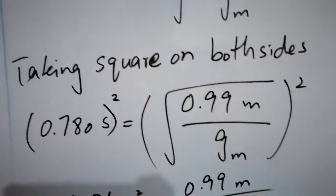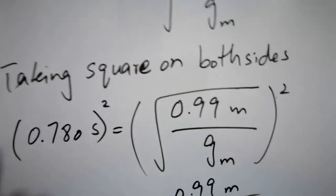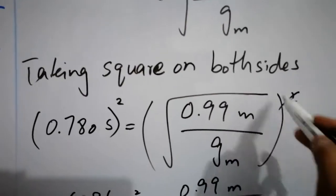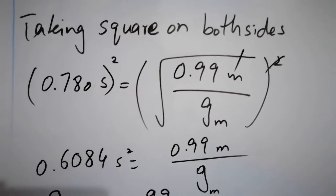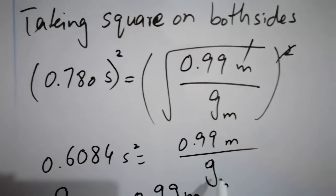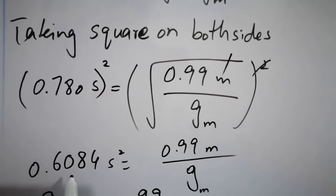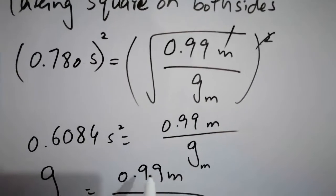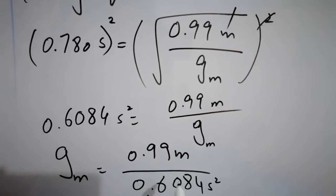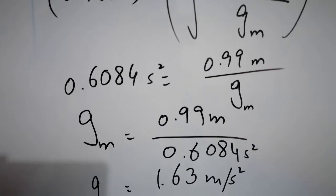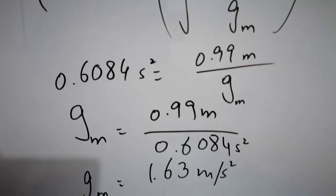Taking square on both sides, 0.780 seconds squared equals 0.99 meters divided by g_m. 0.6084 seconds squared equals 0.99 meters divided by g_m. So when you divide 0.99 by 0.6084, you will get 1.63 meters per second squared as gravity of the moon.